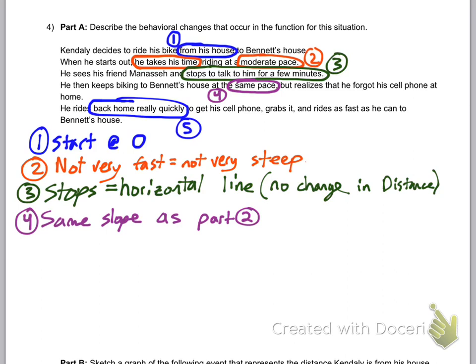Lastly, he says he forgot his cell phone and he rides back home really quickly. Two things here. First of all, back home means he turned around. So instead of going up and the distance is getting further from home, we need to draw the slope down where the distance is getting closer to home.